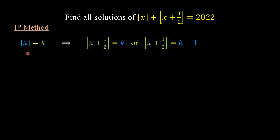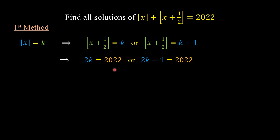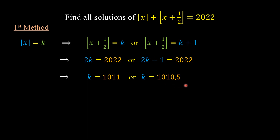If we substitute the floor value of x and these two values of the floor value of x plus one-half into the equation, we have 2k equals 2022 or 2k plus 1 equals 2022. We get k equals 1011, or k equals 1010.5. Since k must be an integer, k equals 1011.